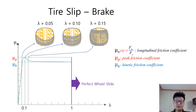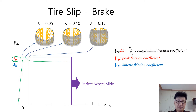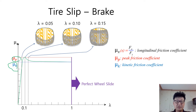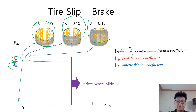This graph describes the longitudinal friction coefficient as a function of longitudinal slip lambda. Mu_P is the peak friction coefficient, which is similar to the static friction coefficient, and Mu_K is the kinetic friction coefficient. Braking force will be maximized at the peak friction coefficient. If the brake force is big enough to overcome the peak friction force, wheel slide happens without the rotation of the wheel. You can see various tire contact patches depending on their slip ratios in the brake.